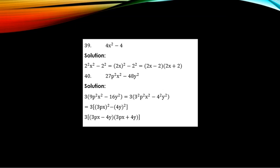Example 39: Factorize 4S squared minus 4. Looking at the form A squared minus B squared, both terms must be squared. Even if a term is not squared, ask yourself if there is a way to express it as a square. For 4S squared minus 4, the 4 can be written as 2 squared. So you have (2S) squared minus 2 squared, which gives (2S minus 2)(2S plus 2).